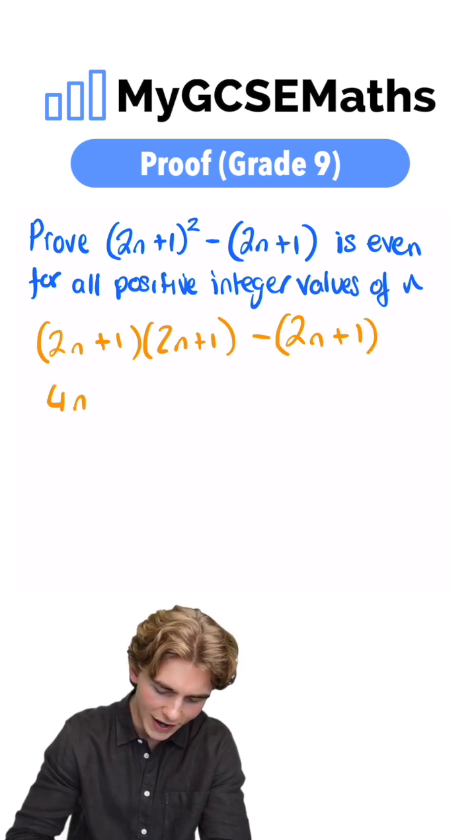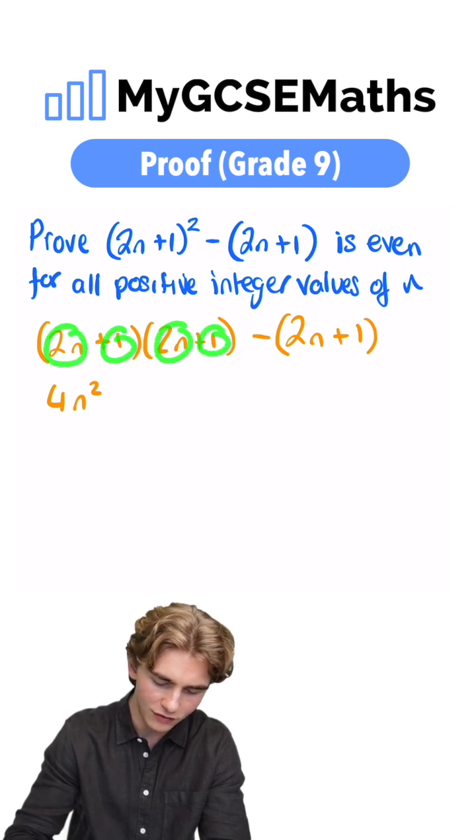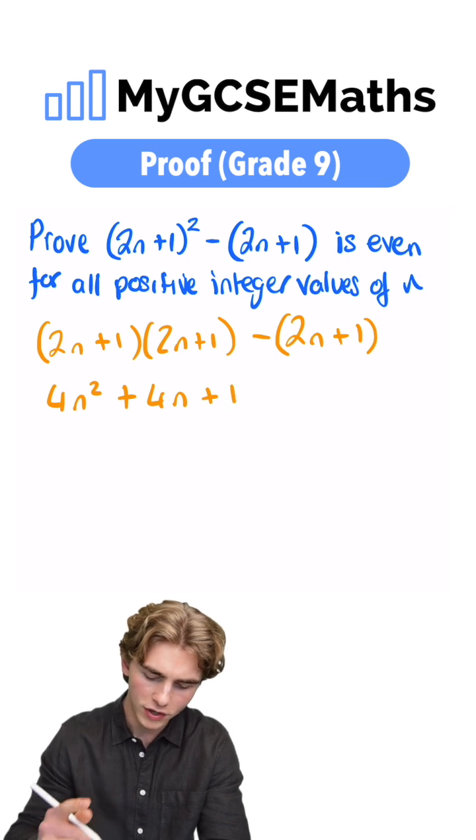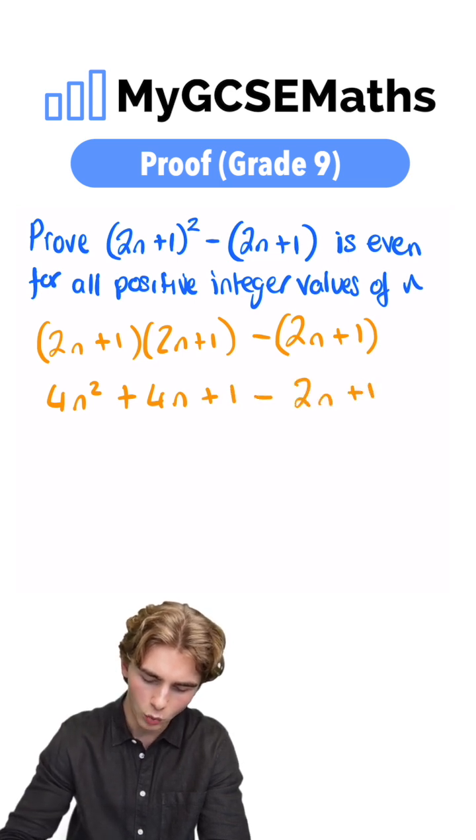2n times by 2n is 4n squared, and then we have 2n times by 1 plus 1 times by 2n. That's going to give us plus 4n, and then we have our plus 1. We use FOIL there, and we're subtracting 2n plus 1.